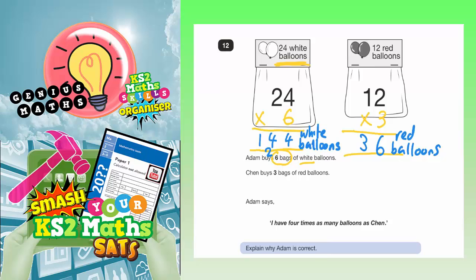Adam has 144 balloons and Chen has 36 balloons. Adam is saying he's got four times as many balloons as Chen. So what Adam is saying is that 144 is four times as many as 36. We've got to explain why it's correct.